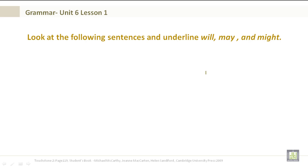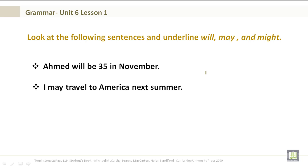Look at the following sentences and underline will, may, and might. Ahmed will be 35 in November. I may travel to America next summer. He might not be able to afford it. What do you think is going to be underlined here? Will, may, and might.